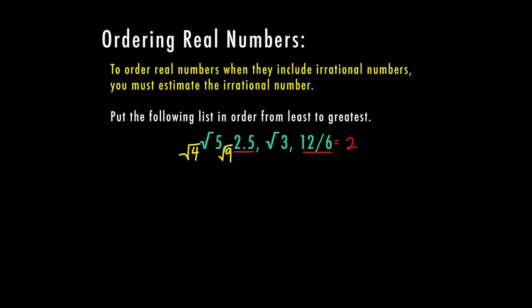So five is going to be somewhere between the square root of four, which is two, and the square root of nine, which is three. So if I'm between two and three, that's going to be two point something. And five is closer to four, so I'm going to be much closer to the number two than three. So I'm just going to estimate 2.2.